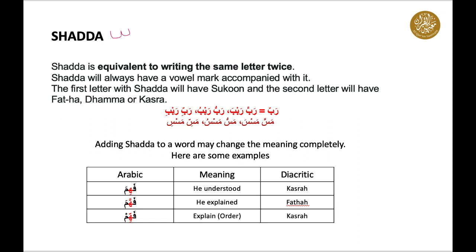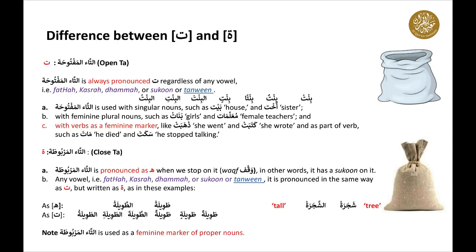Adding shadda to a word may change the meaning completely. For example: fahima means 'he understood,' fahama means 'he explained,' and fahim means 'explain' — it's an order.